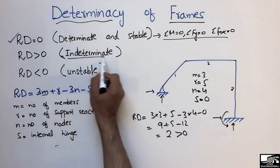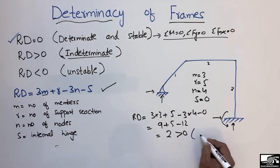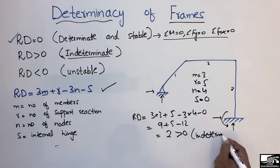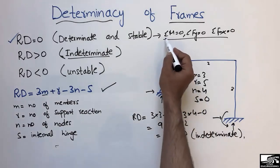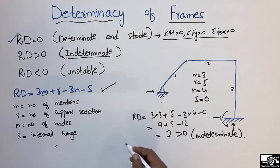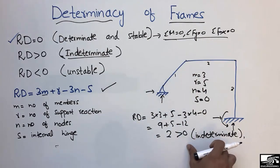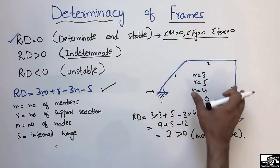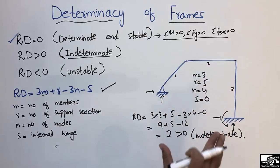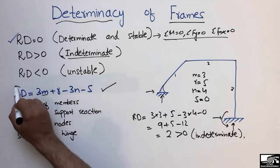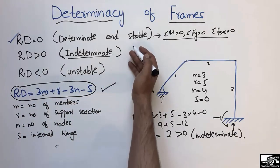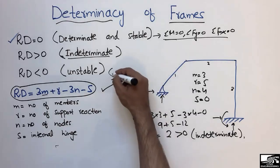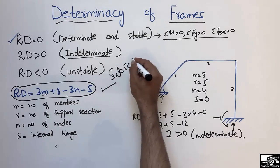Putting values into the formula: Rd = 3(3) + 5 - 3(4) - 0 = 9 + 5 - 12 = 2, which is greater than zero. Therefore this is an indeterminate frame structure. We cannot analyze it using only the three equilibrium equations; we must also use deflection relationships to find shear force and bending moment. I hope you understand, and don't forget to subscribe for daily engineering videos.